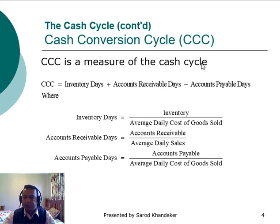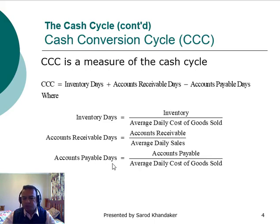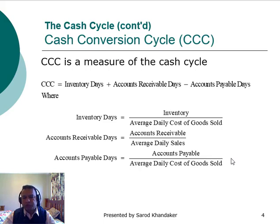How do we calculate inventory days? Inventory days equals inventory divided by average cost of goods sold. Accounts receivable days equals accounts receivable divided by average daily sales. And accounts payable days can be computed as accounts payable divided by average daily cost of goods sold. These are the formulas important for calculations in this chapter.